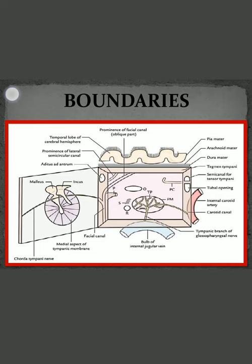We will now discuss the boundaries of the middle ear cavity. To describe the various walls, we will take help of a cube, since the middle ear cavity is shaped as a cube. In this figure, this is the floor, this is the roof, and we are viewing the cavity from the lateral side. This is the lateral wall, medial wall, anterior wall, and posterior wall. We will discuss these walls in detail one by one.